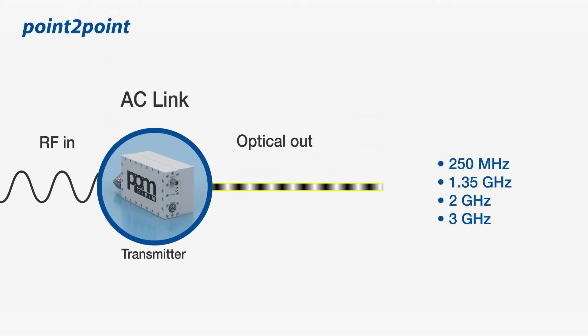AC links use intensity modulation. An RF signal is amplified, conditioned, and converted to the optical domain for transmission over fiber. AC links are available up to 3 GHz.